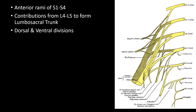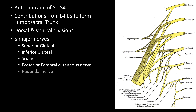The dorsal divisions are highlighted in black in this picture. The main branches of the sacral plexus are the superior gluteal, the inferior gluteal, the sciatic, the posterior femoral cutaneous nerve, and the pudendal nerves. Of clinical relevance, the three major nerves are the sciatic, the posterior femoral cutaneous nerve, and the pudendal nerves.